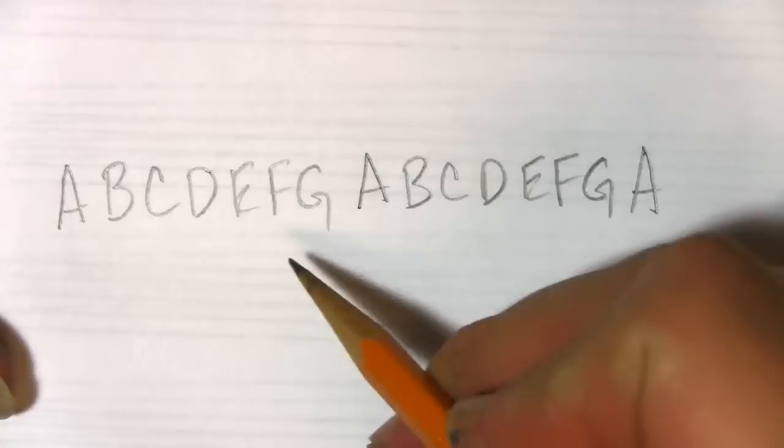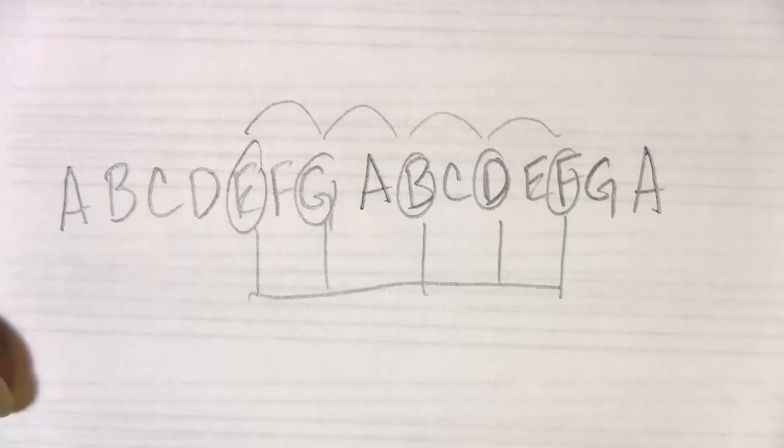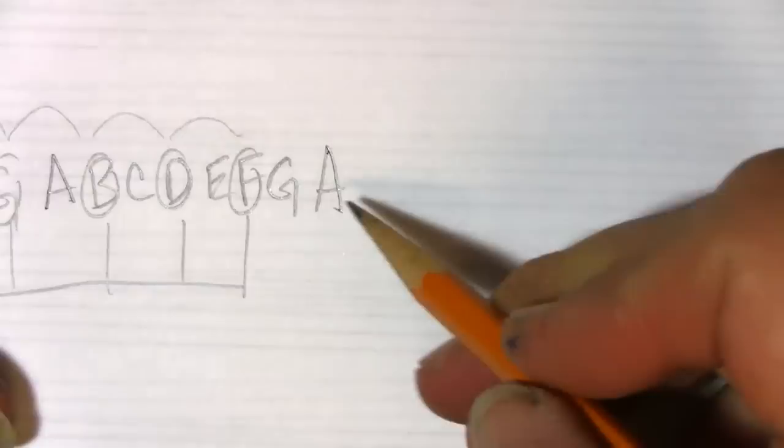You'll see on the lines and spaces it was E, G, B, D, F — going every other note. What do you notice about that? That's every other note in alphabetical order. So it's every other note.